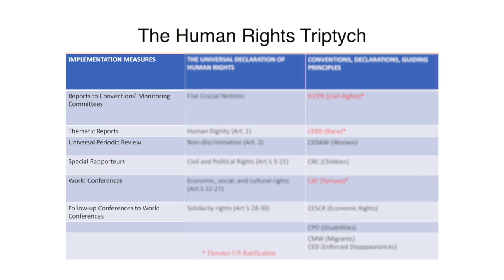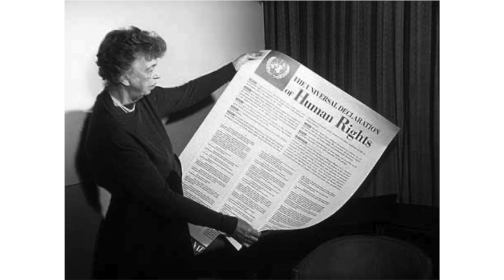Again, the Universal Declaration of Human Rights is the authoritative definition of human rights standards, which was drafted under the able leadership of Eleanor Roosevelt. I'm here with Dr. Anthony Hill, Associate Professor of Social Work, a colleague.